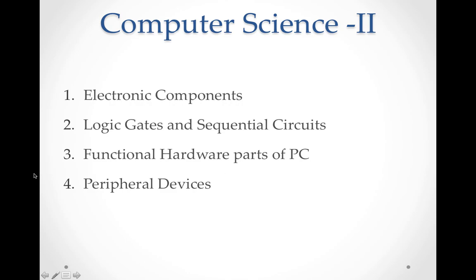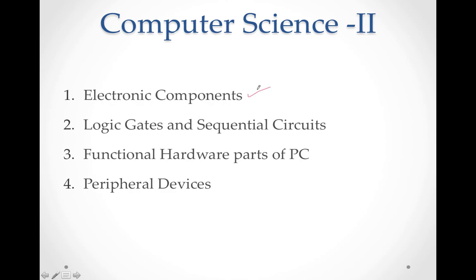CS2 covers functional hardware parts of PC and peripheral devices. First, there is a chapter on electronic components — how many electronic components are used. Then Logic Gates and Sequential Circuits, which are very useful across both years and must be studied well, including how to use them and where they can be used. Functional Hardware Parts of PC is also a very important chapter, covering what happens in the CPU, its parts, RAM, and ROM.